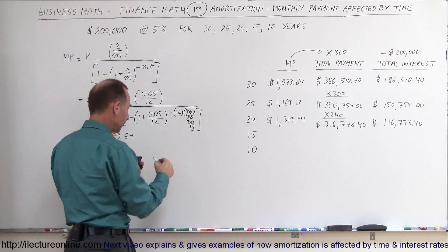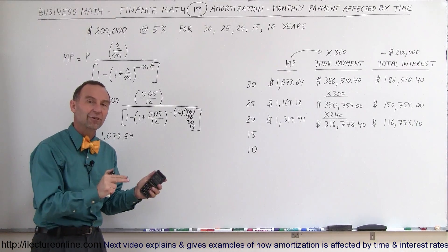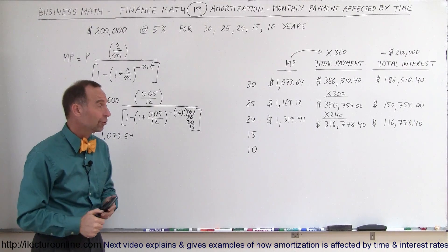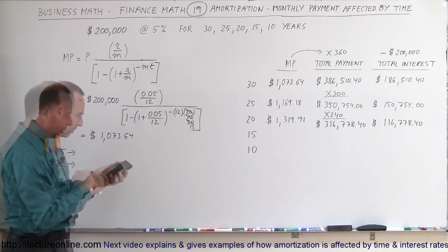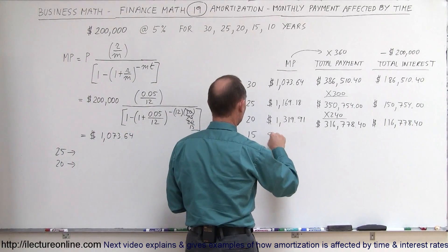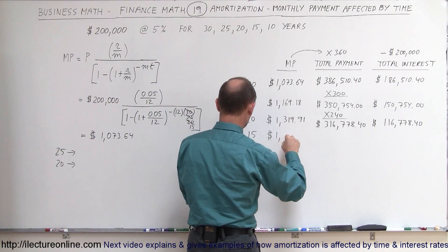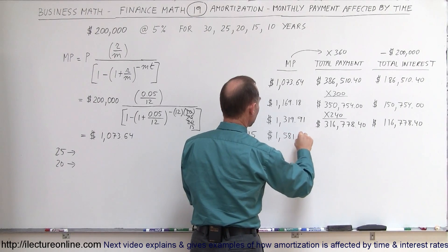So this now becomes 12 times 15 or 180. You have now slashed the number of payments to half because 15 years, of course, is half of 30. Let's see what the monthly payments would be now. Starting from here, so now your monthly payments are $1,581.59.